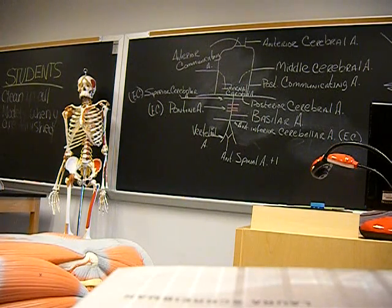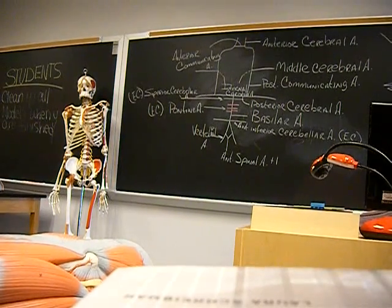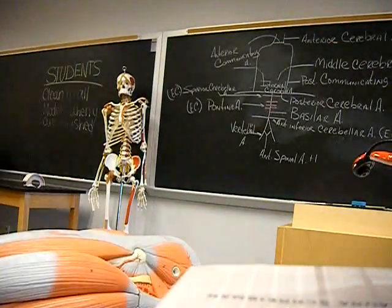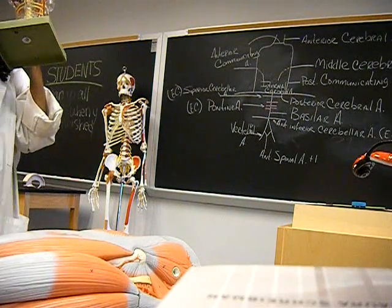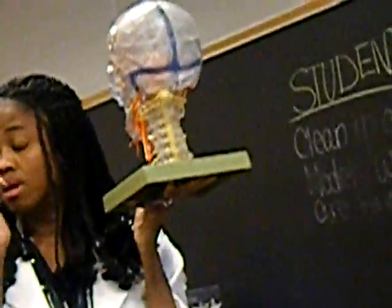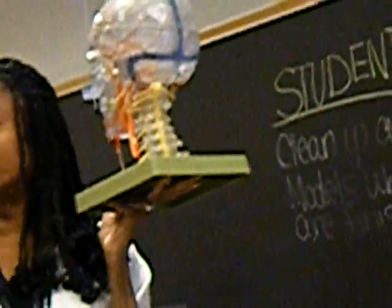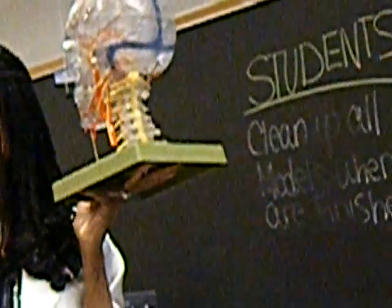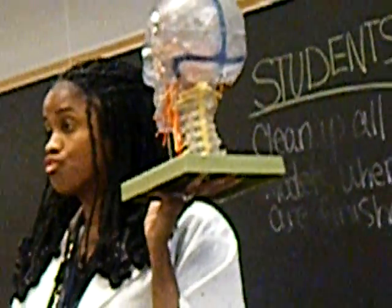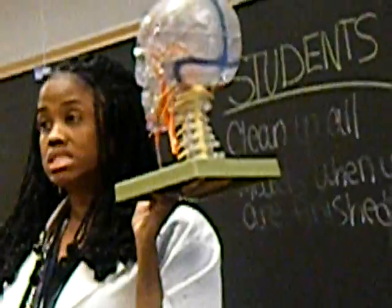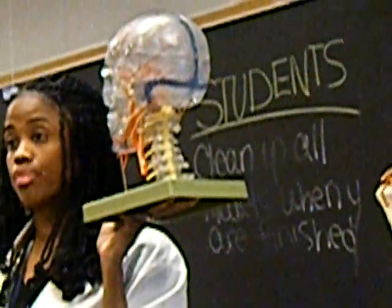Both of these models are great because you can see not only your common carotid, but you can also see that vertebral artery running through your vertebral foramen. If you remember your cervical vertebrae, your cervical vertebrae is the only vertebrae that has a transverse foramen.